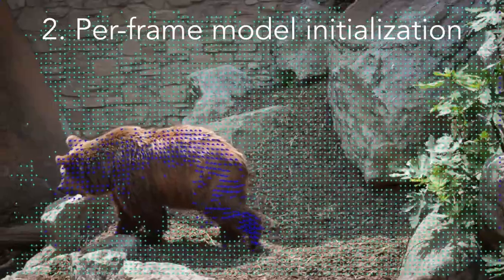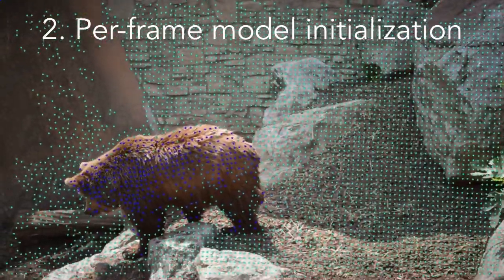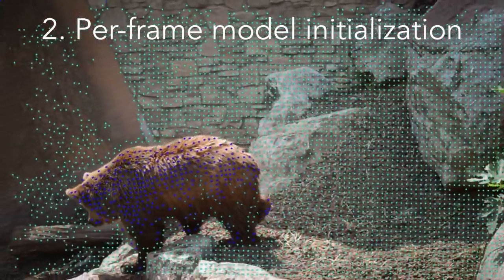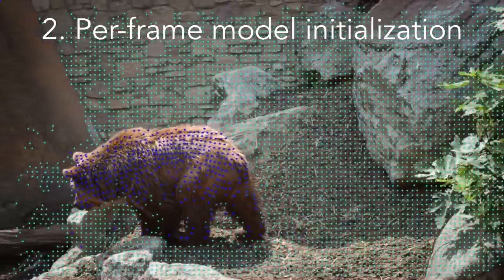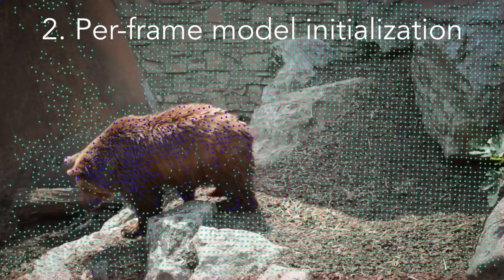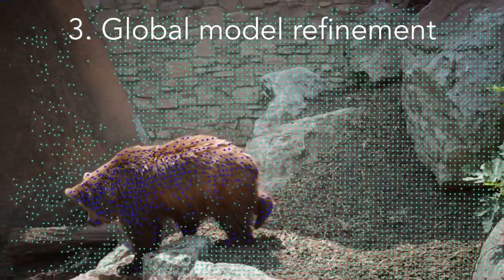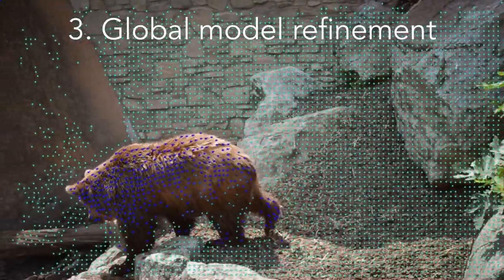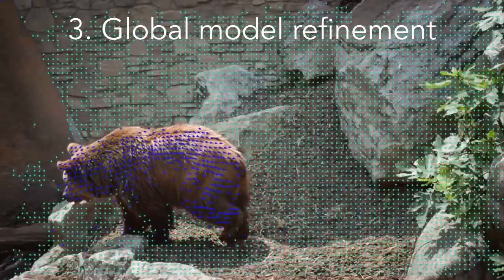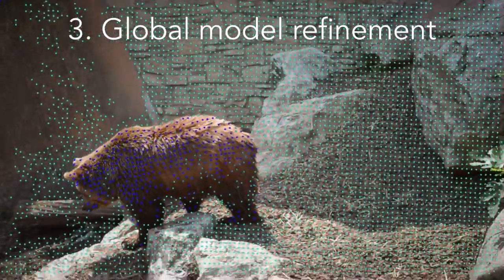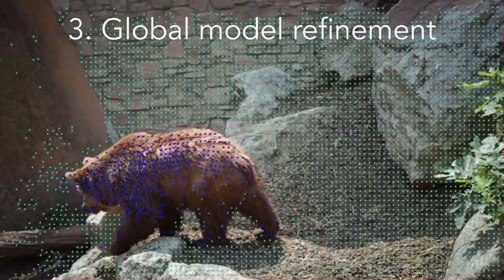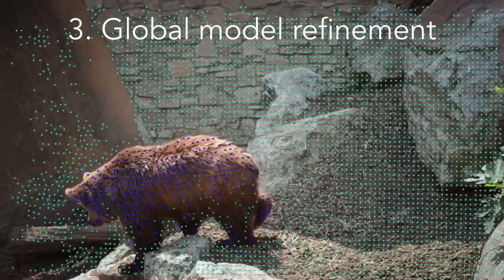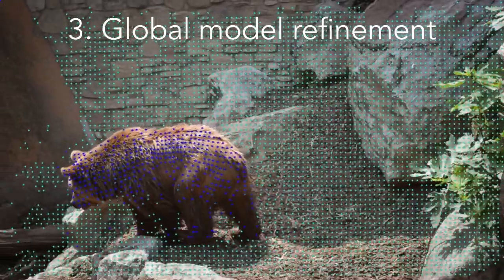Each track gets a continuous score saying how confident we are that it's foreground. Here, blue tracks have high foreground confidence, and green tracks have high background confidence. We then refine these confidences by optimizing a robust cost function that considers all frames at once. Looking at each track as a whole allows us to correctly identify tracks like those on the bear's feet that are part of the foreground even though their motion matches the background motion in many frames.